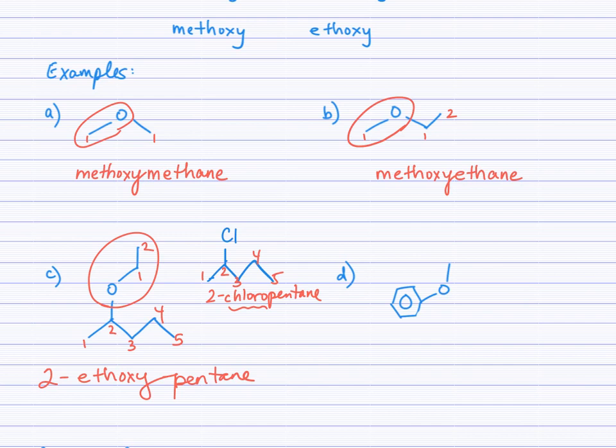As you try part D, you can pause the video and then check back in. Okay, so the root here is benzene. And now we see a 1-carbon alkoxy group. And so we have methoxy benzene. And we do not need to number that because there is only one side group on the benzene ring.